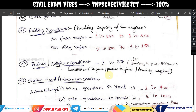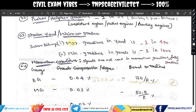Station yard or minimum gradient: for Indian Railways, 1 in 1000 is used. For example, over 1000 meters (1 kilometer), the slope increases by 1 meter. The maximum gradient is 1 in 400 and the minimum gradient is 1 in 1000.